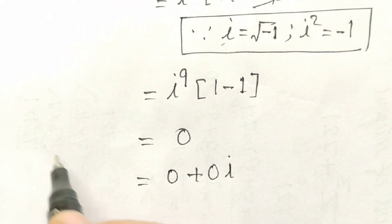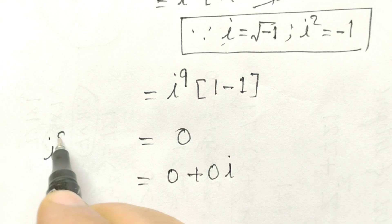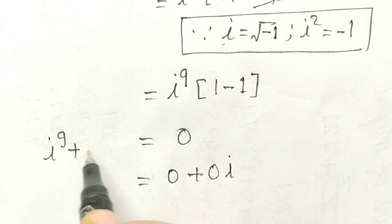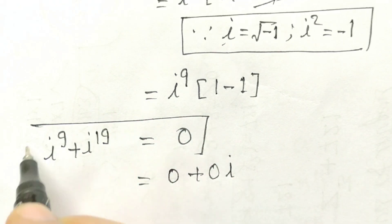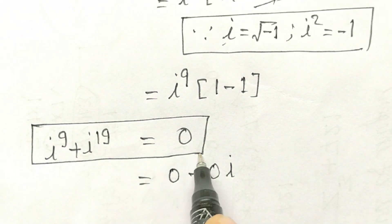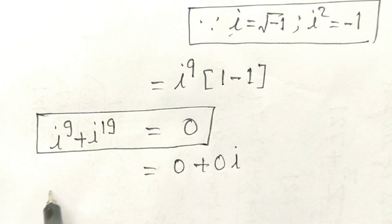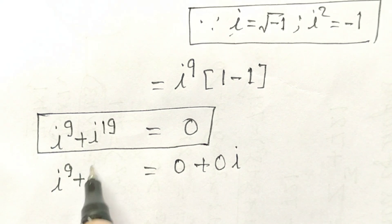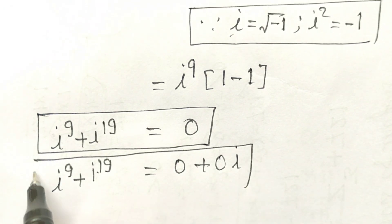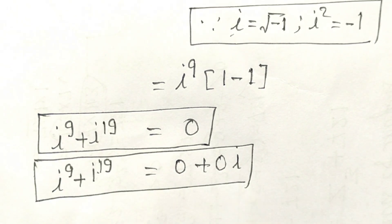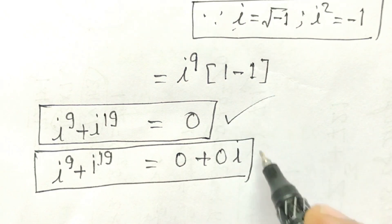Therefore, i^9 + i^19 equals 0. Thank you, friends.